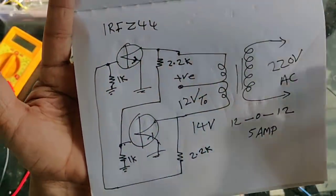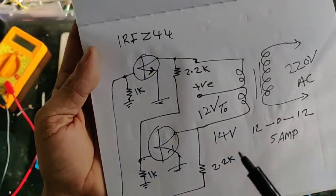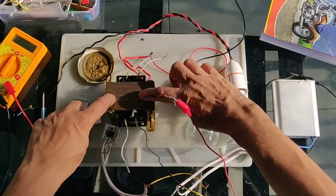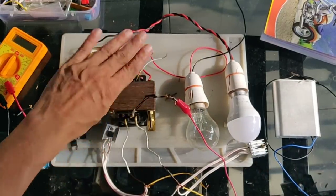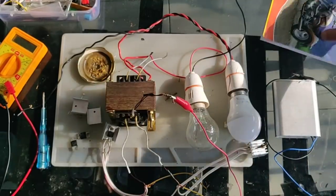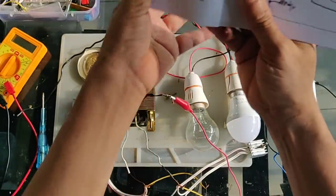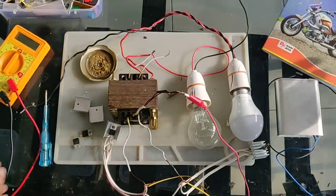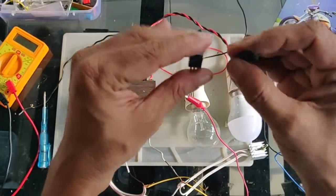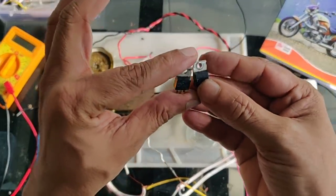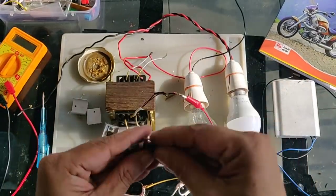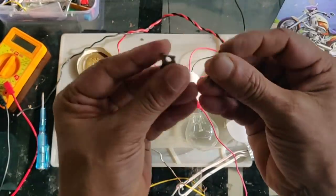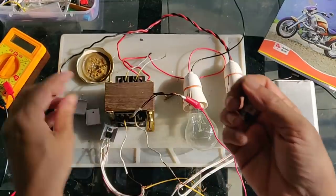This is a MOSFET inverter with two MOSFETs. This is the transformer. I used this transformer for 15A. This is the center tap. This one is the center tap — in DC. We use the heatsink.